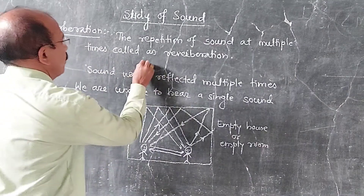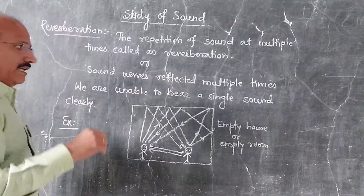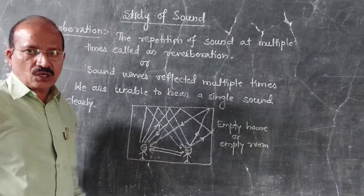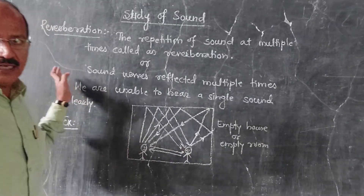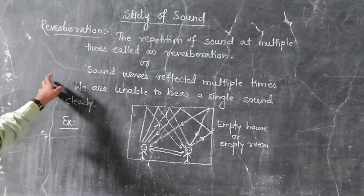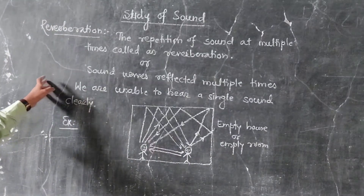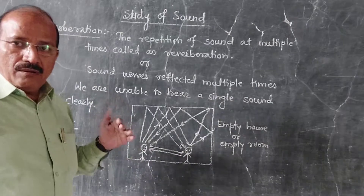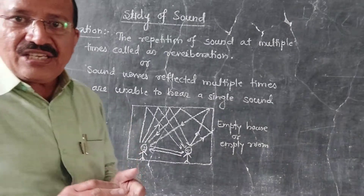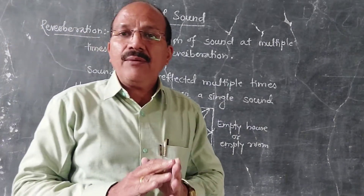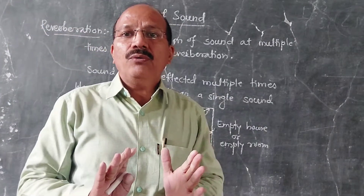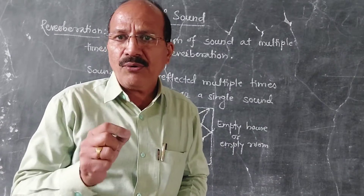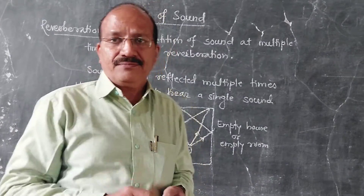Or a sound wave that is reflected multiple times is called as reverberation. In this case, we are unable to hear the sound clearly — a single sound we can't hear.